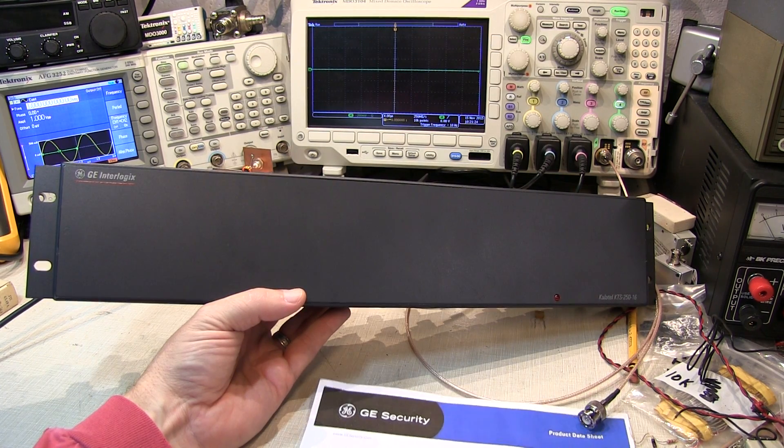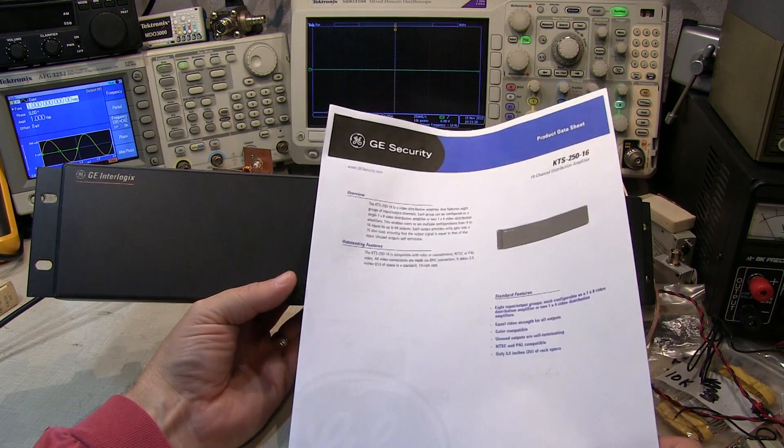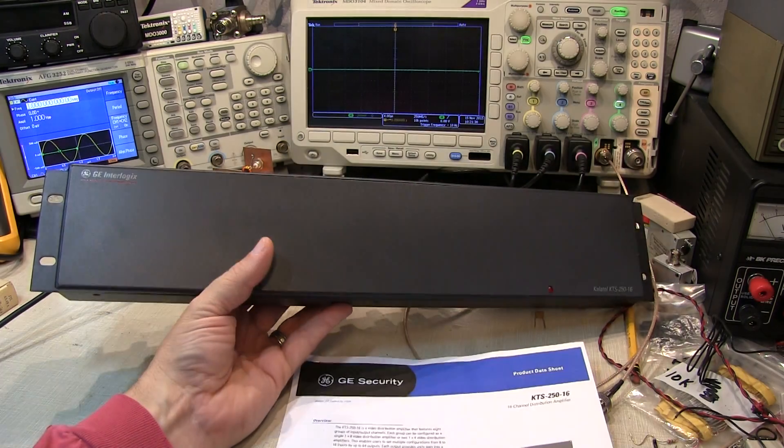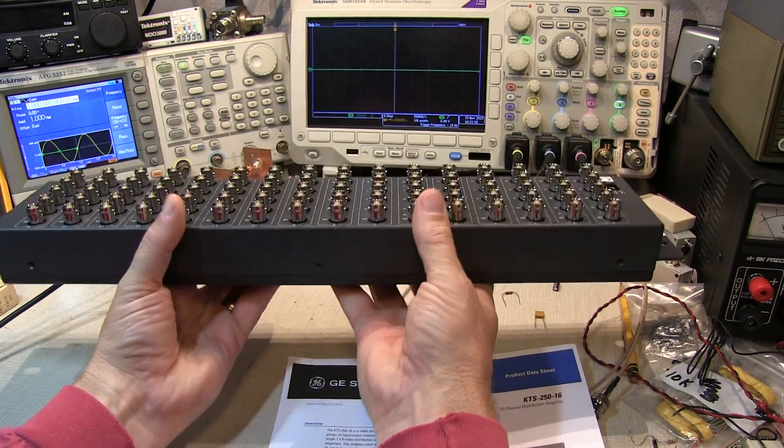Here's another ham fest find. This box here is a sixteen channel video distribution amplifier, mainly used in video surveillance and security systems.